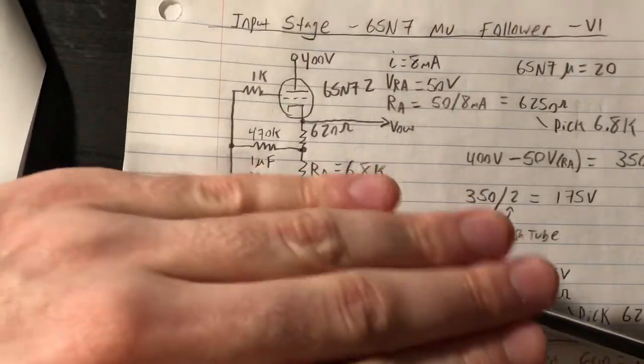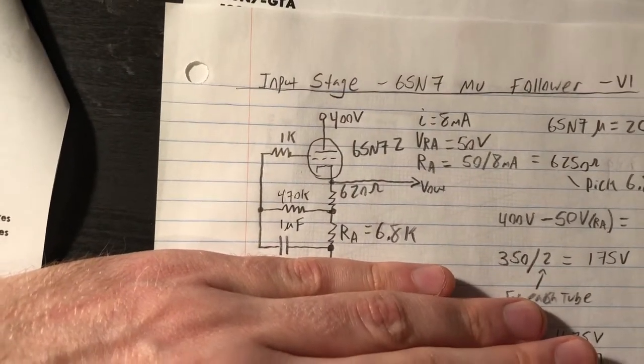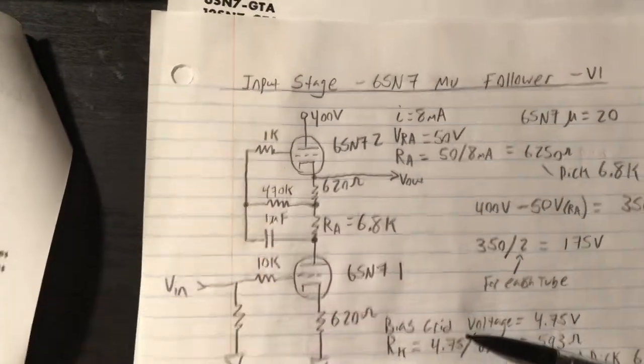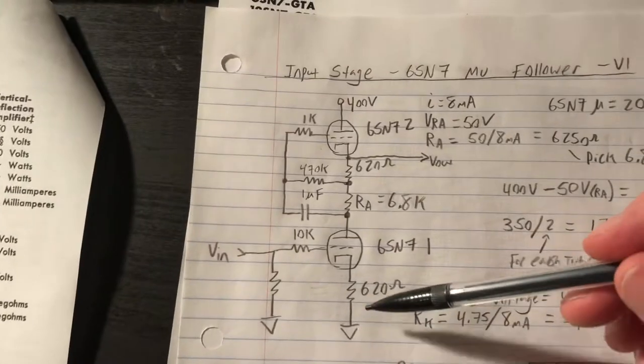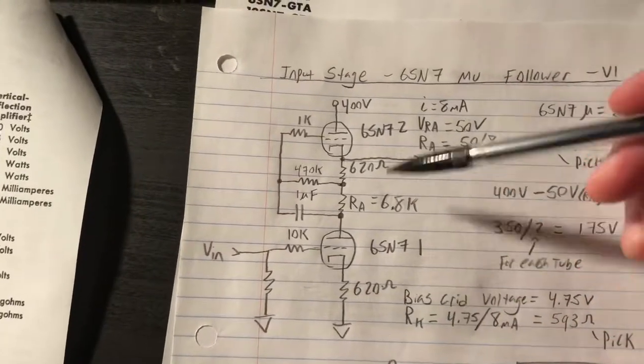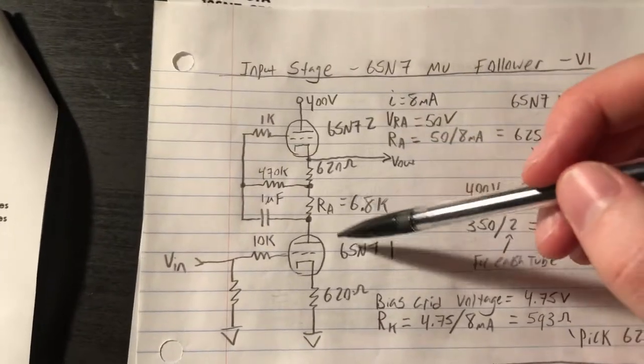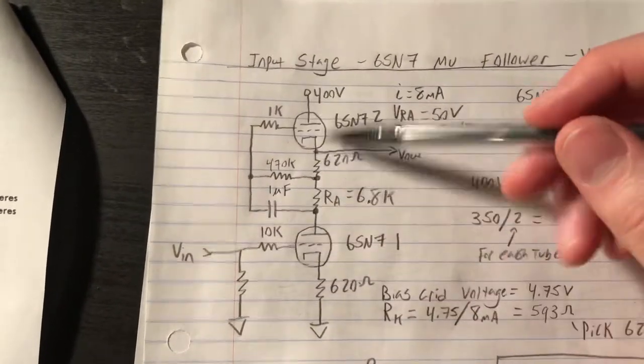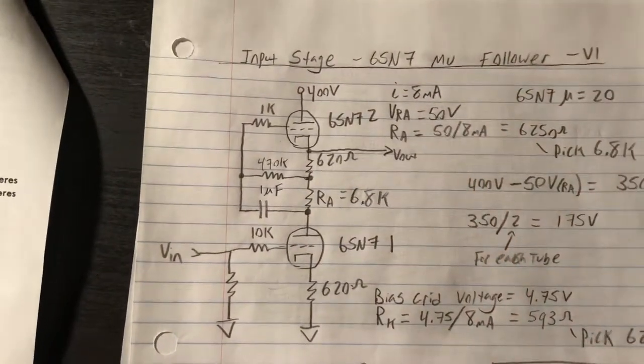If the signal on the grid increases, we pull more current through the stack. However, if we assume for a second that this bottom tube isn't here, we have something that looks like on the top a cathode follower. If V in increases and we conduct more current through this stack, the plate of the bottom tube is going to decrease.